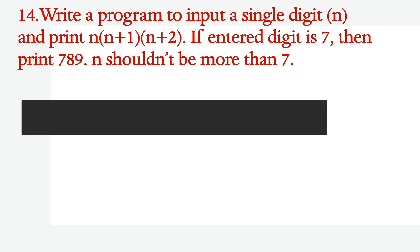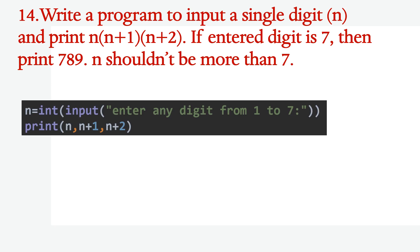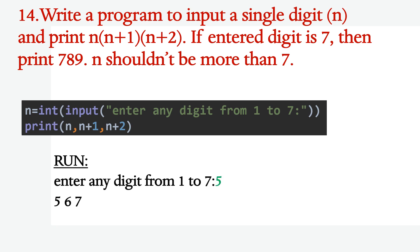Write a program to input a single digit N and print N, N+1, N+2. N should not be more than 7. The input statement says 'enter any digit from 1 to 7'. Print N, N+1, N+2. For input 5, it prints 5, 6, 7.